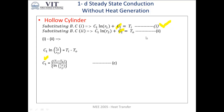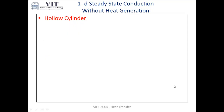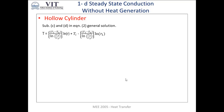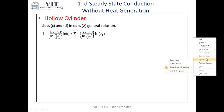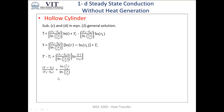Substituting C1 back into the first boundary condition equation, we can determine C2: C2 = Ti − [(Ti − T0) / ln(R1/R2)] · ln(R1). Now substituting both C1 and C2 into the general solution, the factor (Ti − T0) / ln(R1/R2) is common. Rearranging, we obtain the temperature profile: (T − Ti) / (Ti − T0) = ln(R/R1) / ln(R1/R2).